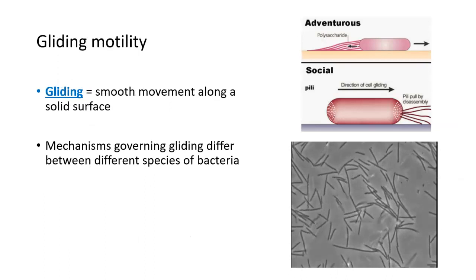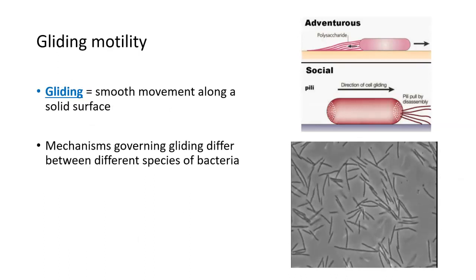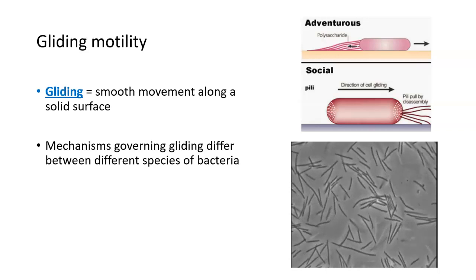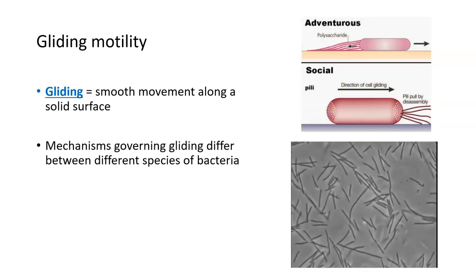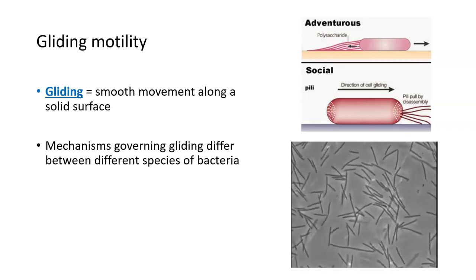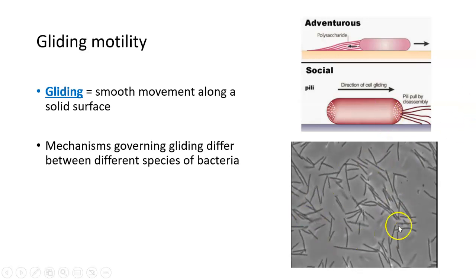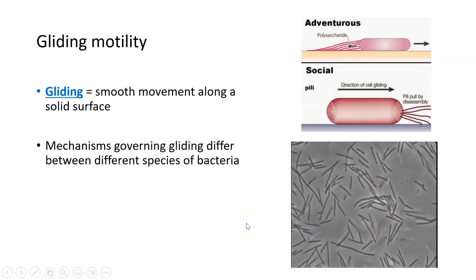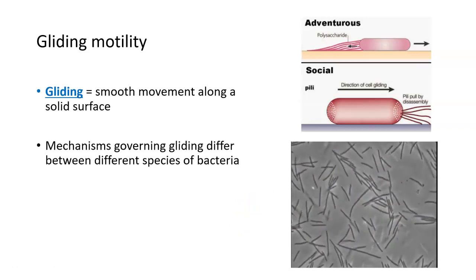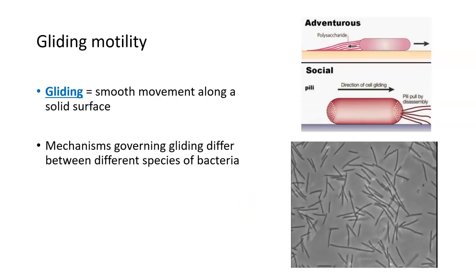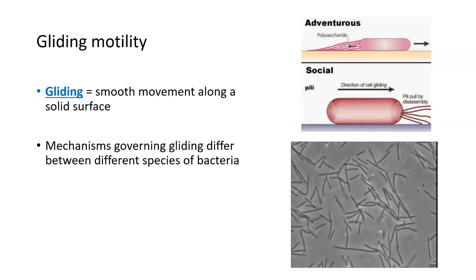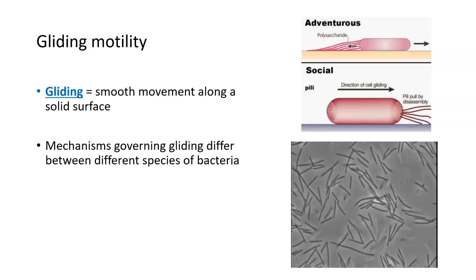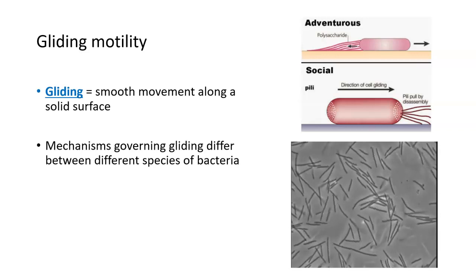Another type of motility is gliding — a smoother movement along a solid surface, as opposed to the jerky movement of twitching. Gliding is also thought to be governed by pili, but we're not totally sure about the mechanisms. As opposed to twitching, gliding is a much more smooth movement.